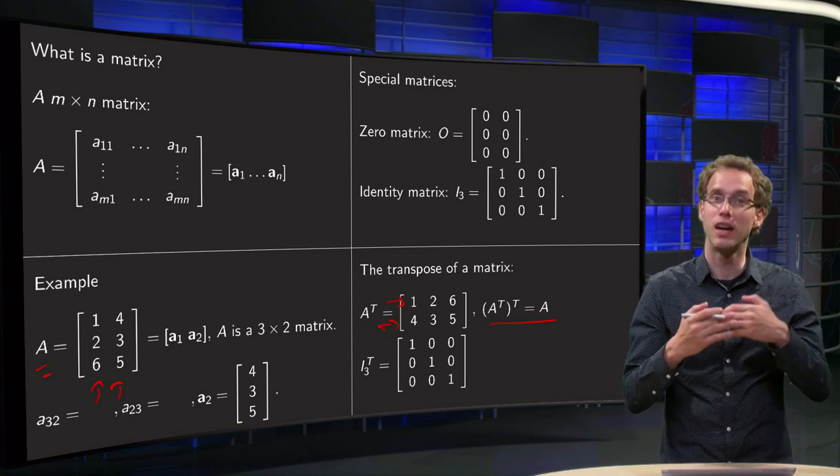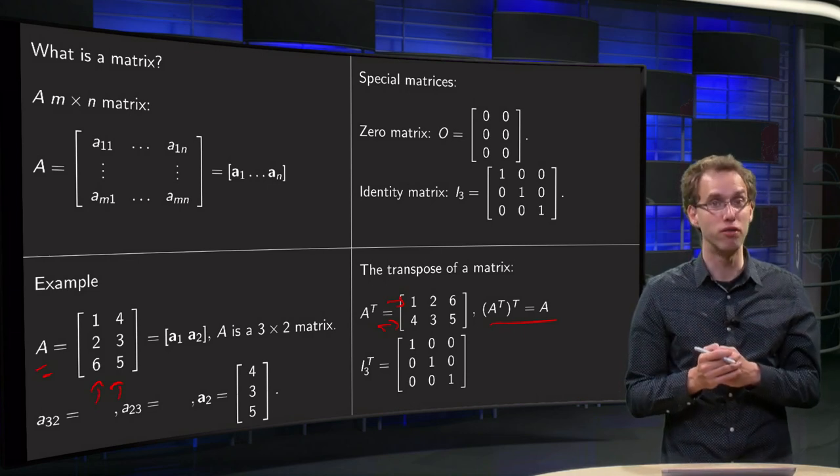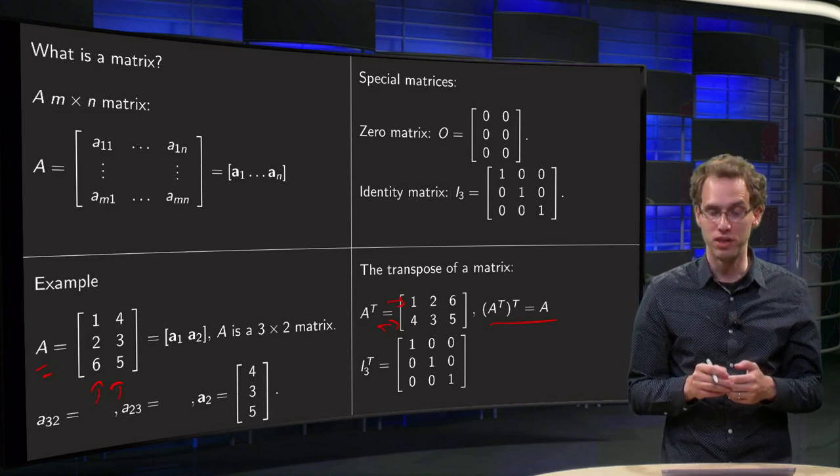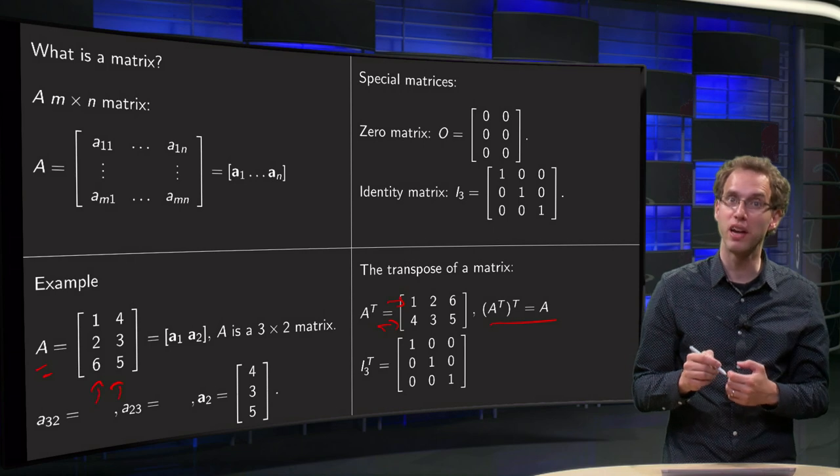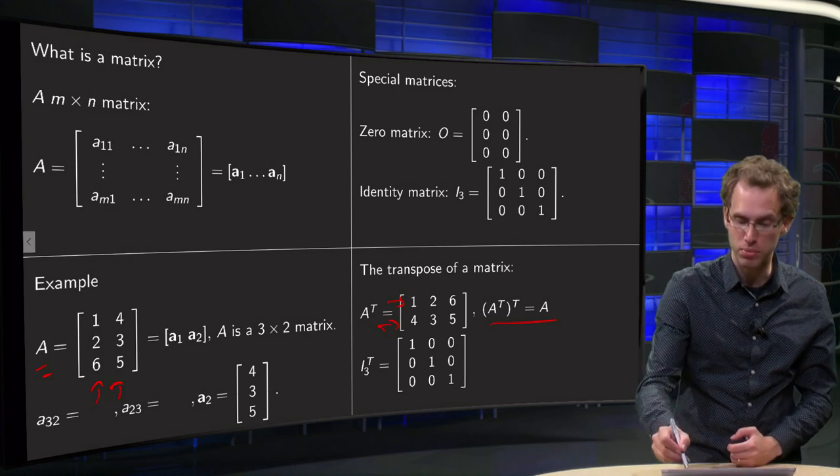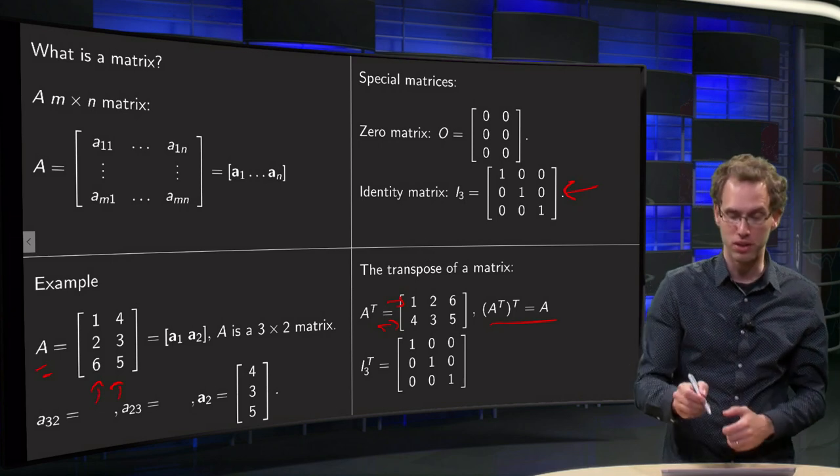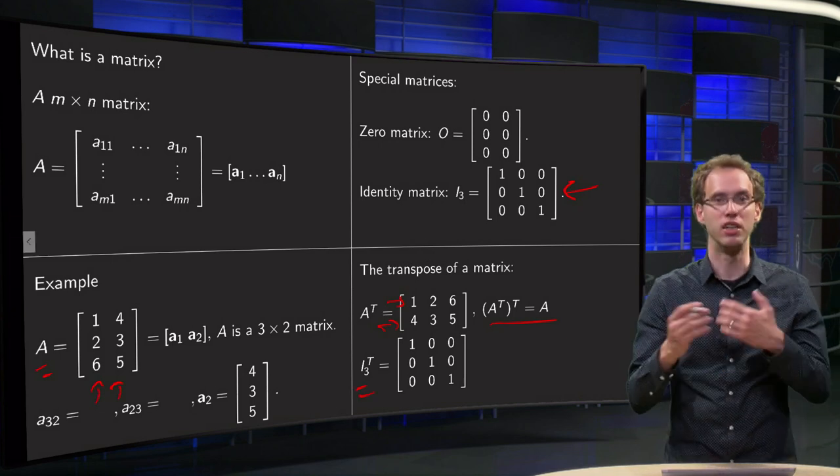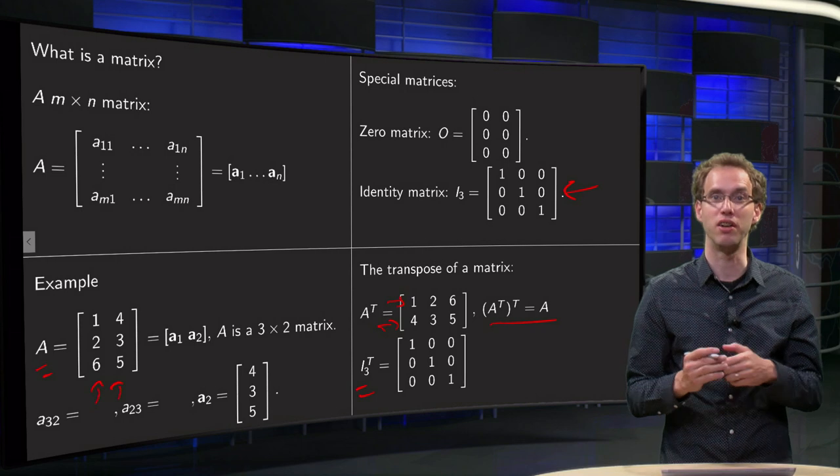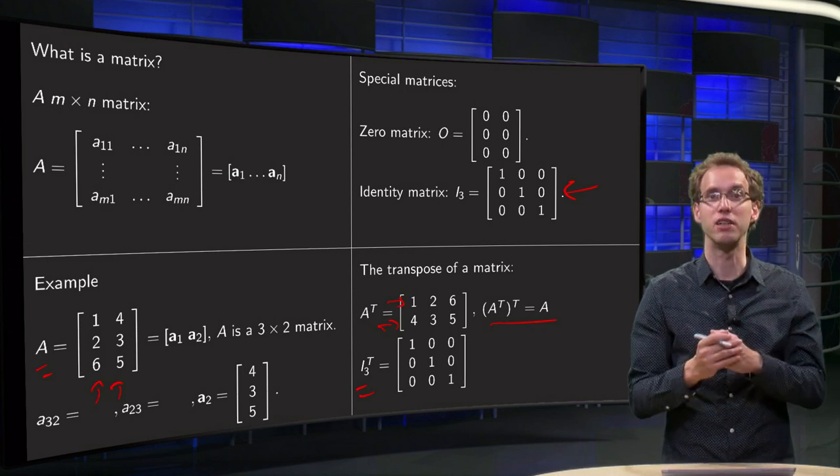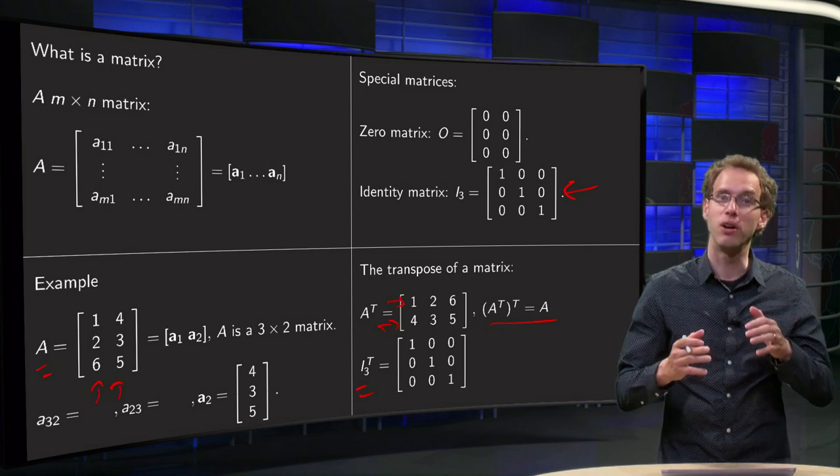Well, sometimes taking the transpose of a matrix doesn't change the matrix, that can happen. We have seen, as you see already in the example on the slide over here, if you take the transpose here of your identity matrix, you interchange rows and columns. Well, they are the same, so the transpose of the identity matrix is just the same as the identity matrix itself. So that can happen, but in general, taking the transpose of course will change the matrix.